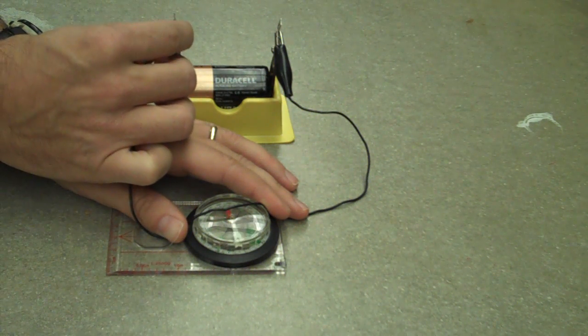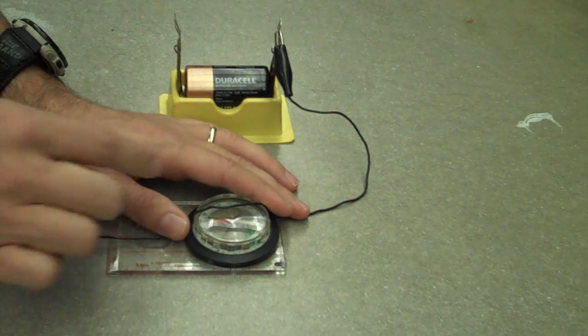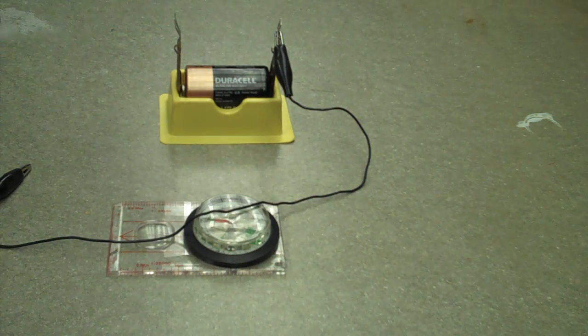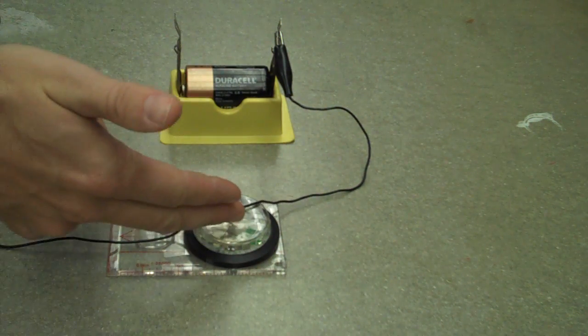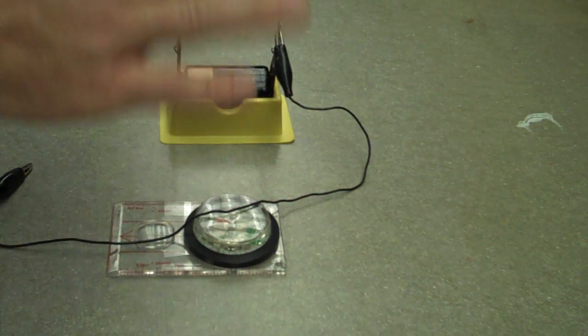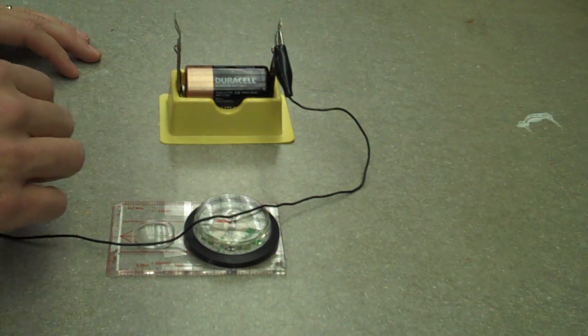And then I'm going to connect this to there and you can see what happens to the needle. It moves. Hopefully you can see that. And so this is the first piece of evidence. If you have a current, it interacts with the compass. They already know the compass is a magnet. So electric currents make magnetic fields.